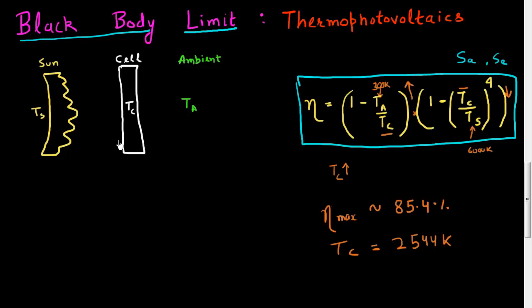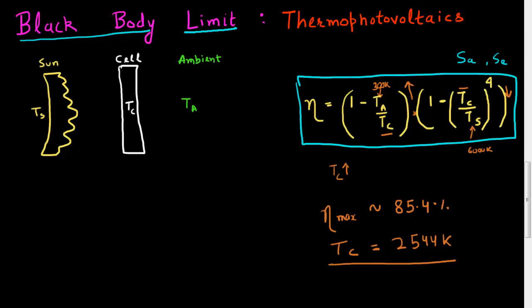The temperature of the cell to obtain this maximum efficiency is not zero — this expression is telling me that my cell has to be at a very high temperature. If you think about 2544 Kelvin, this is much higher than the melting point of most semiconductors. But if I do take my cell to that temperature, then this efficiency would be maximum — around 85 percent.